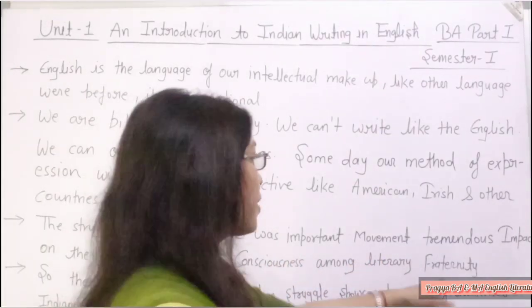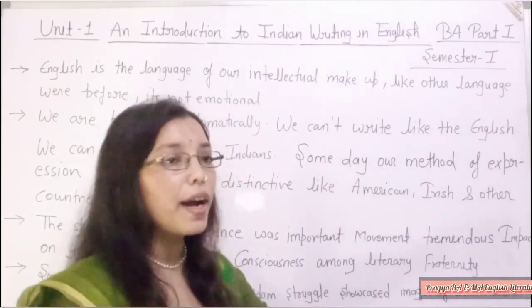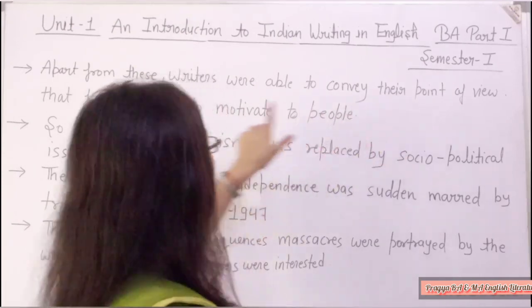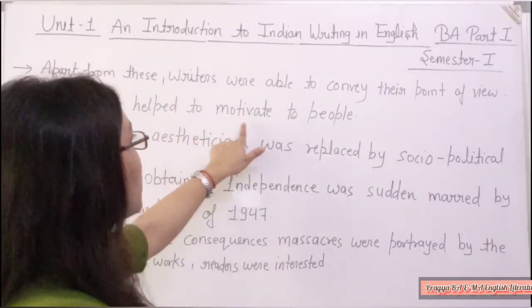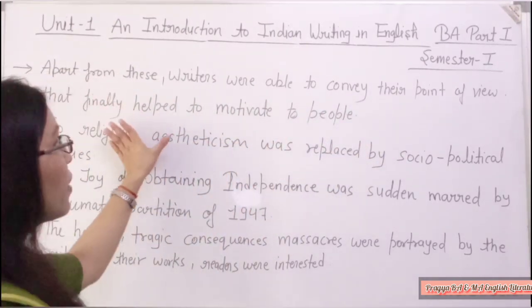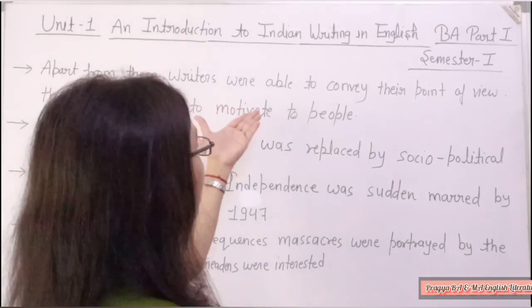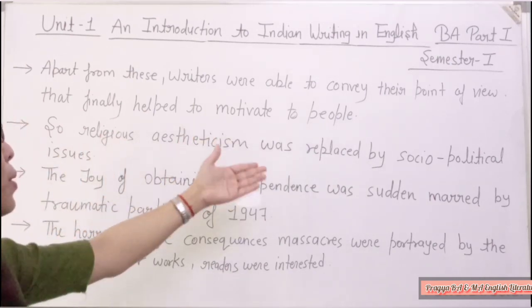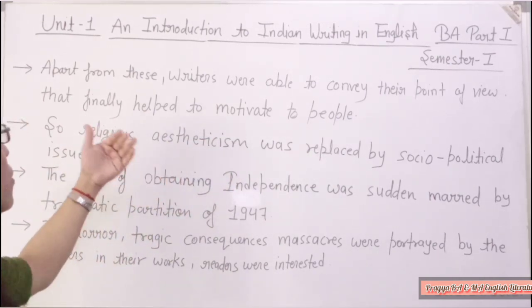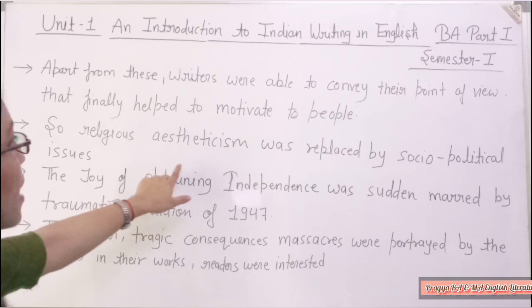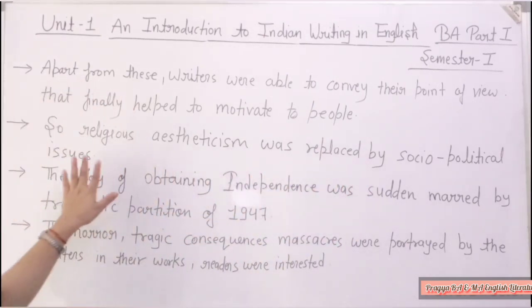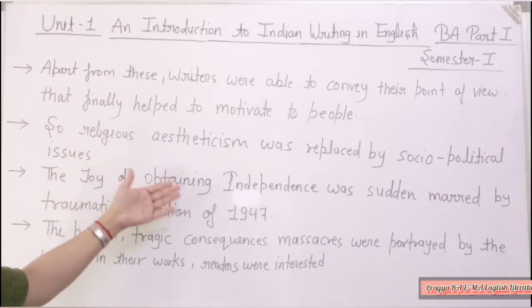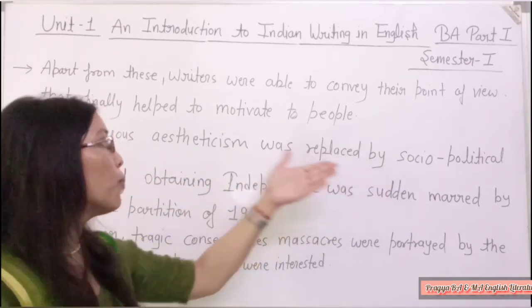Literary fraternity — fraternity means brothers and sisters. Writers were able to convey their point of view, which finally helped to motivate people. All these writers were able to convey their point of view and guided people. Religious aestheticism was replaced by socio-political issues at this time.